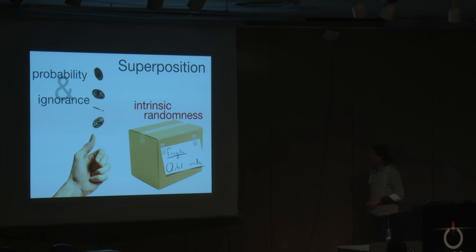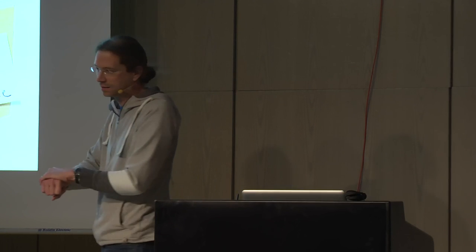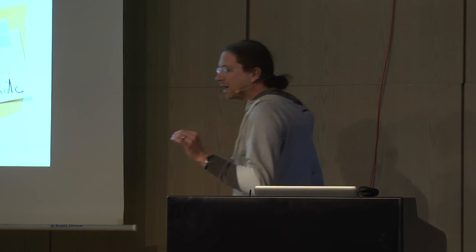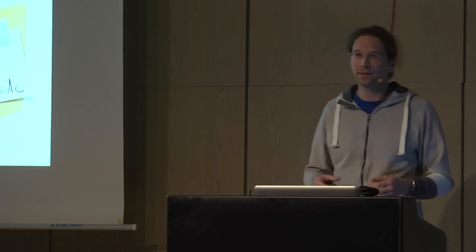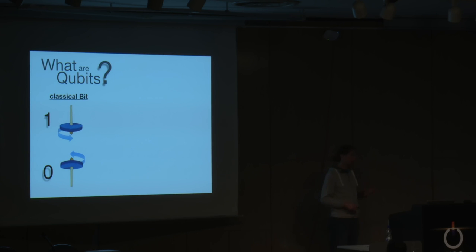Is that the same as flipping a coin and covering it? No. The state of the coin is described by probability — 50-50 — and my ignorance, because I haven't looked yet. But the fate of the coin is already chosen; if I uncover it, the result was there before. This is not true for superpositions of qubits. As long as we haven't looked, the fate of the qubit wasn't decided yet — there is no record, no decision made. This is one reason why there lies power in the concept of quantum mechanics.